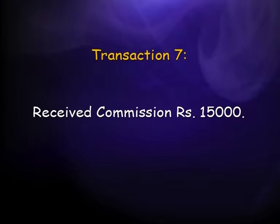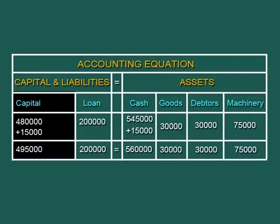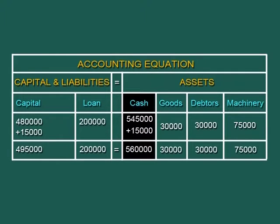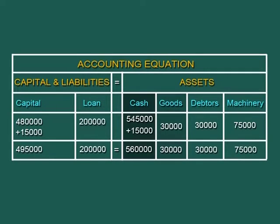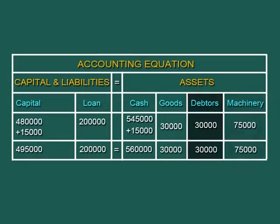Seventh transaction: we received commission of rupees 15,000 in cash. This increases cash by rupees 15,000 on the asset side. Since commission is income, it increases the owner's profitability and capital rises from rupees 4,80,000 to rupees 4,95,000. Cash increases from 5,45,000 to 5,60,000. Total capital and liabilities equal rupees 6,95,000, matching assets: cash 5,60,000, goods 30,000, debtors 30,000, and machinery 75,000.